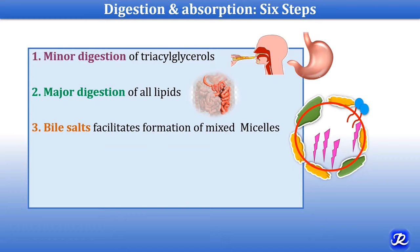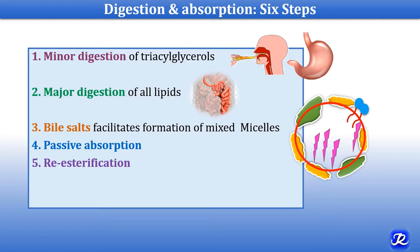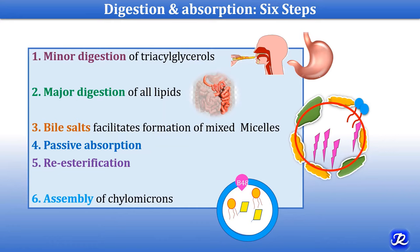Fourth is passive absorption of products of lipolysis from the mixed micelle into the intestinal epithelial cell. Fifth is the re-esterification of 2-monoacylglycerol with free fatty acid inside the intestinal cell. And sixth is the assembly of chylomicrons containing apoprotein B48, A1, triacylglycerol, cholesterol esters, and phospholipid, and export of this chylomicron from the intestinal cell into the lymphatics.